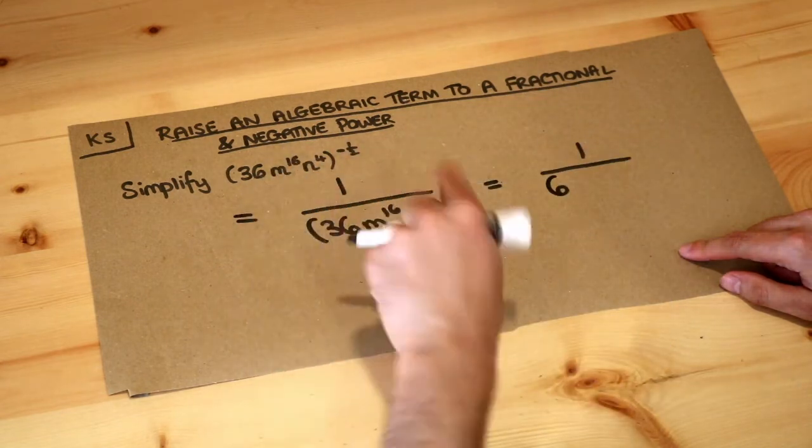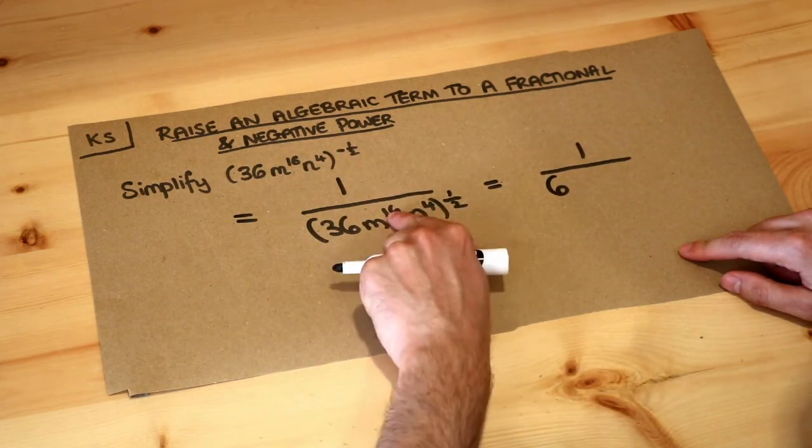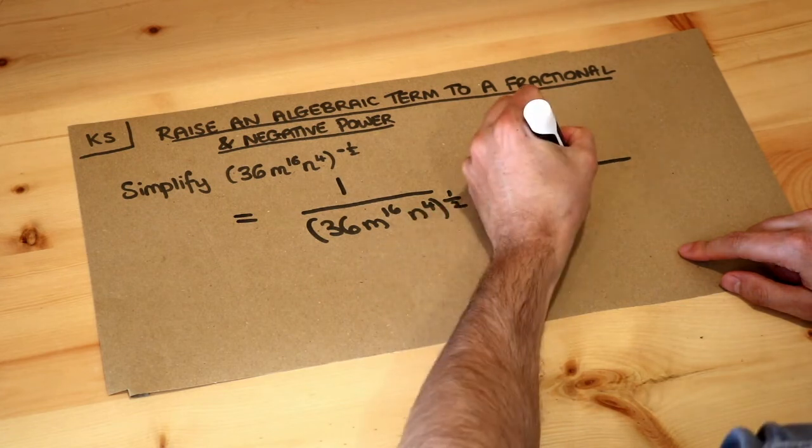You've got a power to a power, so remember you multiply the indices together. 16 times half is 8, so it's m to the 8.